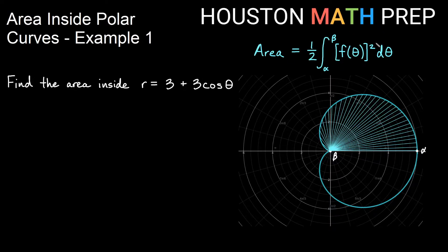Now we want to figure out what those are once we plug into our formula here. So our area is going to equal one half. The integral from alpha to beta, we'll come back and do that. Now my function squared, so r squared, is going to be 3 plus 3 cosine theta all squared d theta.